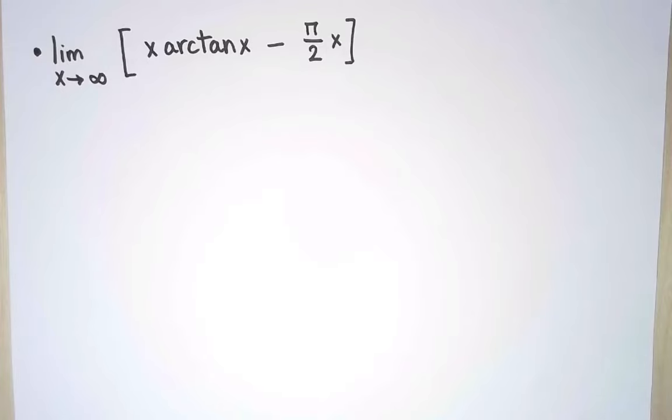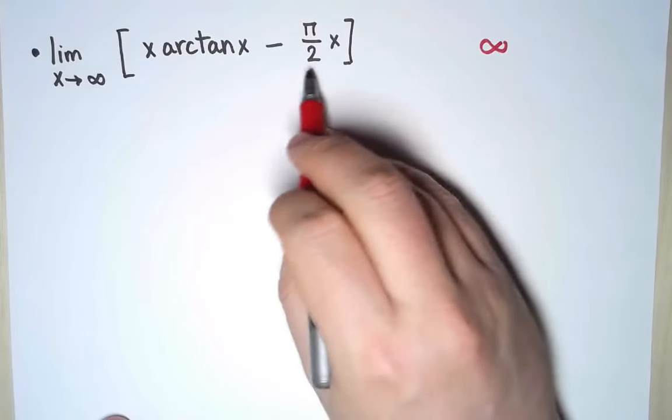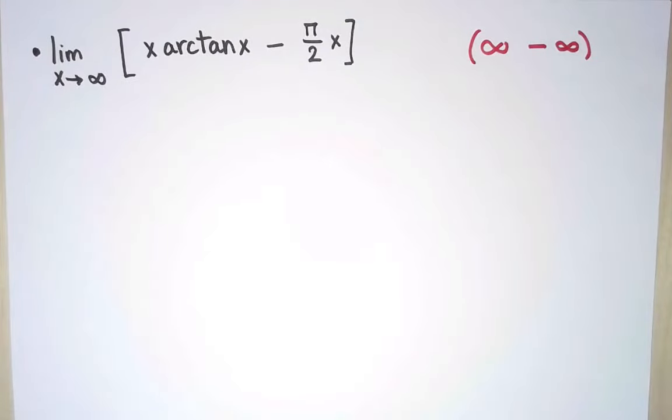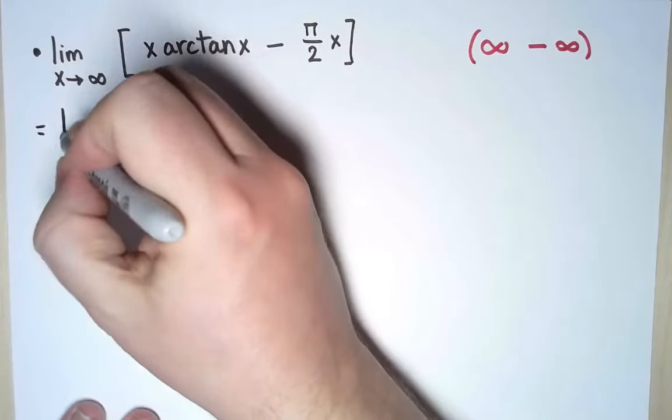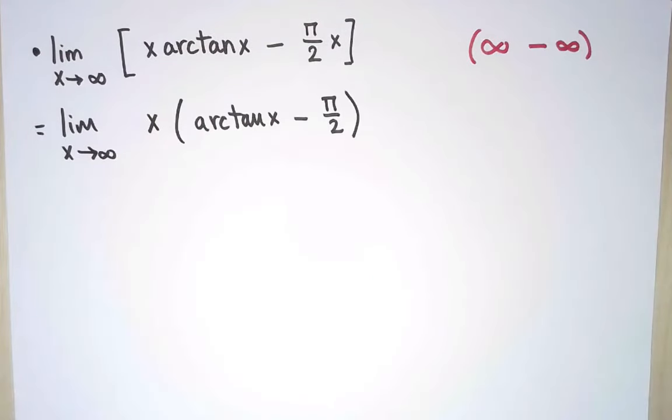I'm trying to compute this limit. As I have written it now, it is an indeterminate form, because the limit of this term is infinity and the limit of this term is also infinity. So I have infinity minus infinity. Well, I notice I can take x common factor. That's a good idea, because I have more tools for products than for differences.